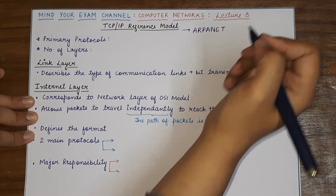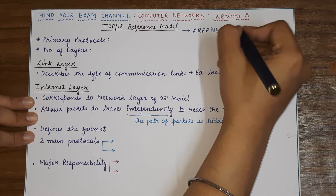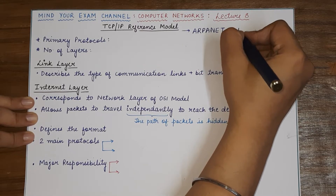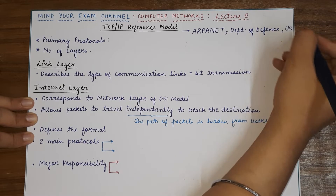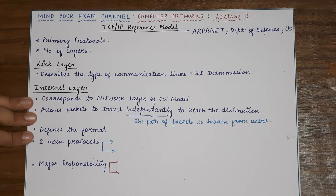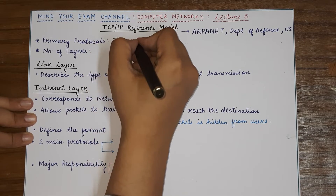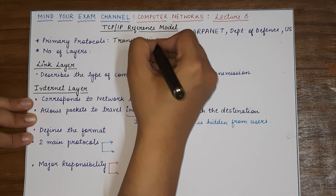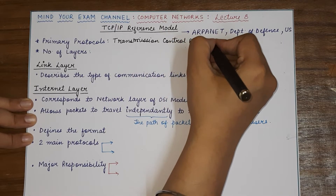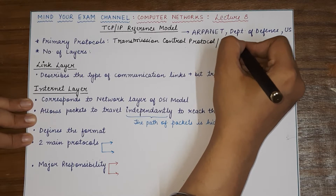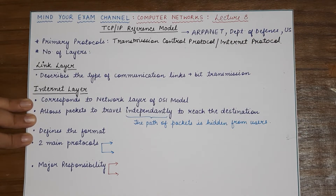So one important point to remember: the OSI model was proposed by ISO, whereas the TCP/IP reference model was proposed by ARPANET in collaboration with the Department of Defense at the US. The TCP/IP reference model basically consists of two main protocols — the Transmission Control Protocol, which is TCP, and the Internet Protocol, which is IP. These two are the most important protocols used in the TCP/IP model, which give it its name.